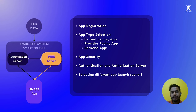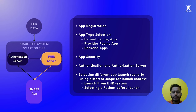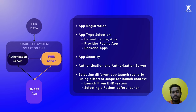The SMART ecosystem provides many features. For example, it gives you the platform to register your application. When you build a SMART on FHIR application, you have to register it. After registering, you choose the type of application — for example, is it a patient-facing app, a provider-facing app, or a backend app? App security is also provided by the SMART ecosystem; you can add secrets to your applications.